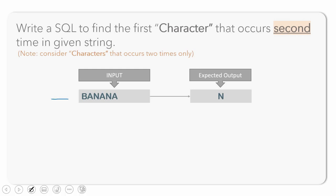Suppose the input is 'banana'. B is the first character and it is not recurring anywhere. A occurs first here, this is the second occurrence of A, and this is the third occurrence of A. N has a first occurrence and a second occurrence.